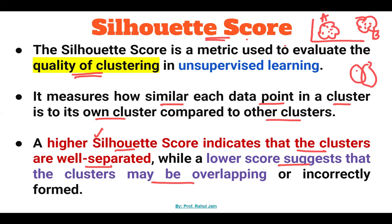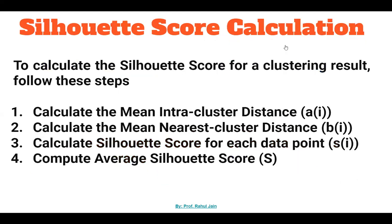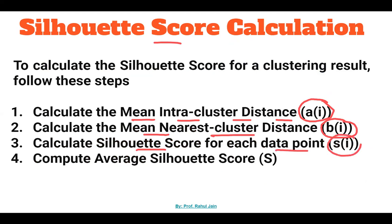To calculate the silhouette score we have four steps. First, calculate the mean intra-cluster distance, represented as a(i). Second, calculate the mean nearest cluster distance, represented as b(i). Third, calculate the silhouette score for each data point, which is s(i). Fourth, compute the average silhouette score, that is S.